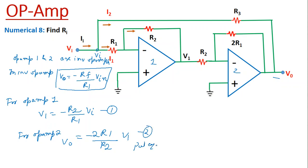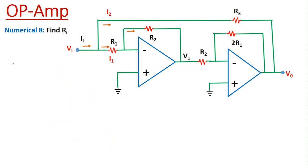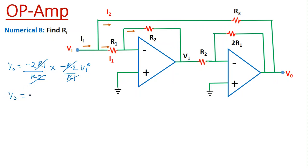Now we substitute equation 1 into equation 2. V0 equals minus 2R1 over R2 multiplied by V1, and V1 is minus R2 over R1 times Vi. The R2 terms cancel and the R1 terms cancel, and the two negatives give a positive, so we get V0 equal to 2Vi. This is equation number 3.